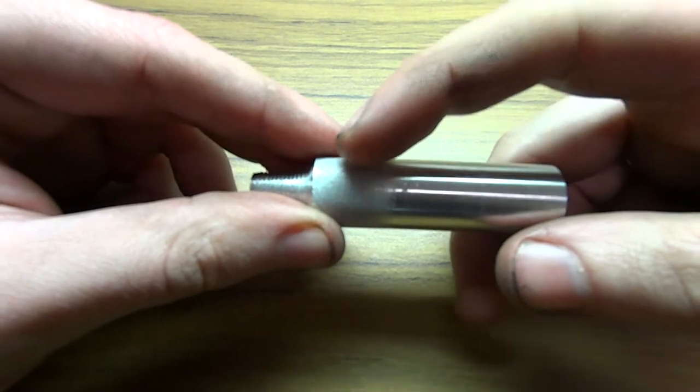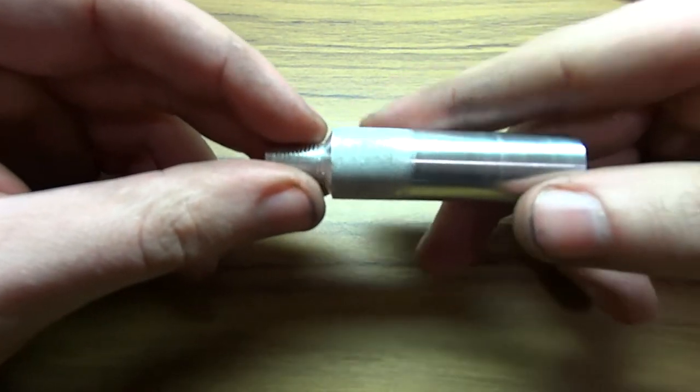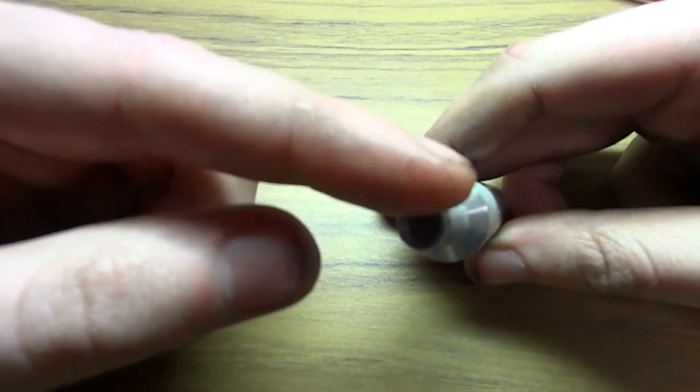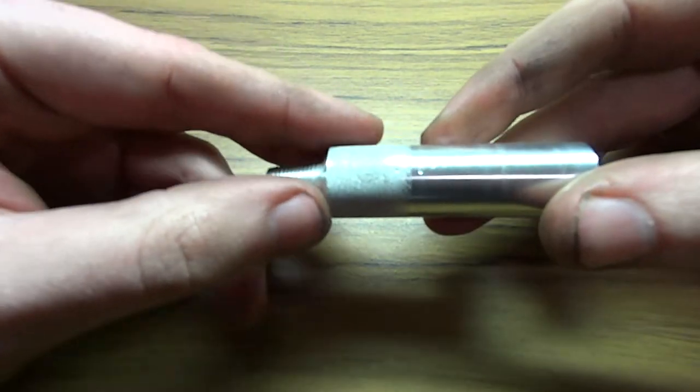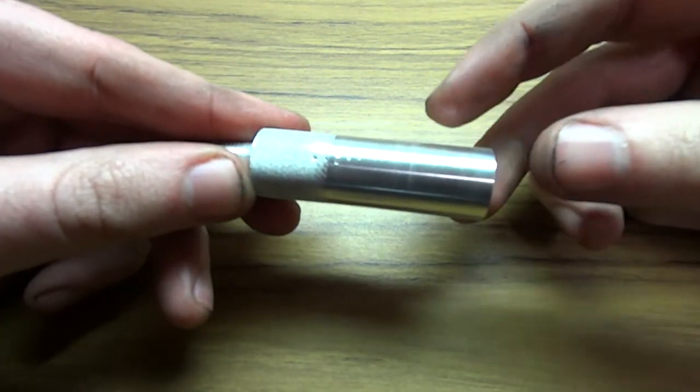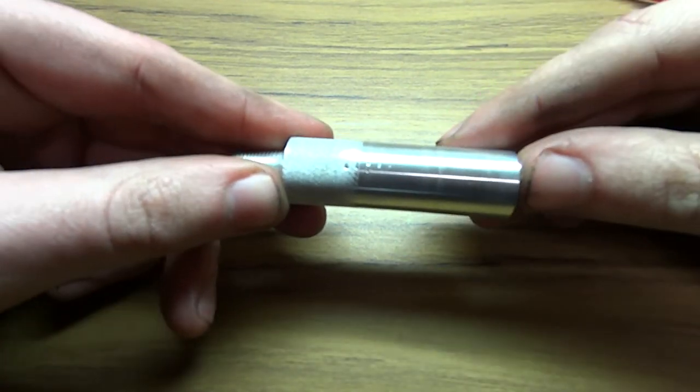Depending on the position of that piston determines how much volume there is inside the cylinder. So if it's all the way at the bottom and it's sealed off, there's minimal volume. If it's all the way up here though, then obviously the volume is increased.